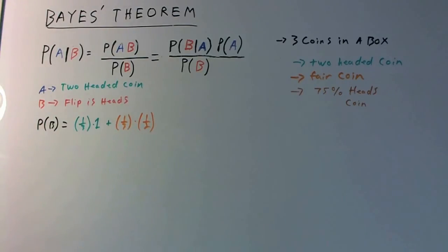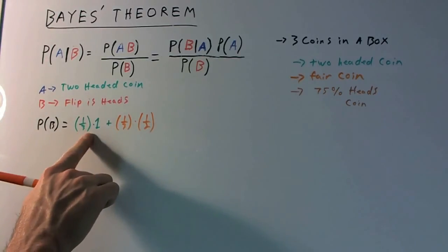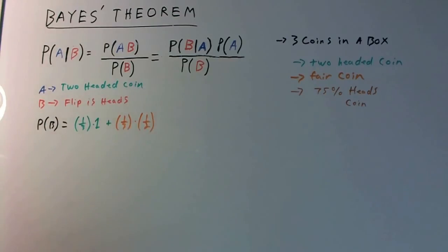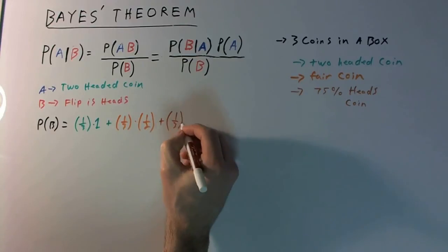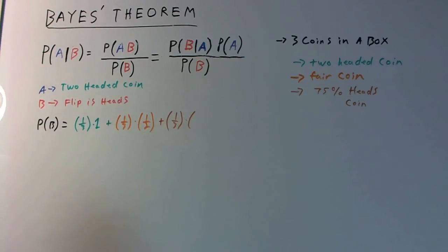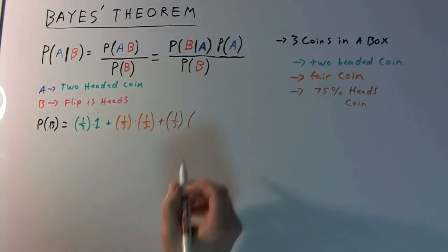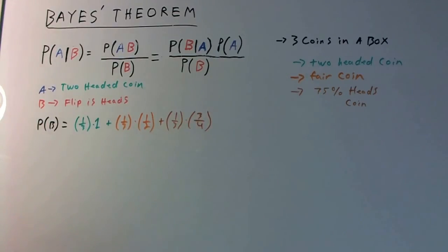Again, AND and OR rule — it could be either the two-headed coin, or the fair coin, or the biased coin. The probability of picking the biased coin is obviously one-third, and the biased coin has to come up heads, which happens three-quarters of the time, because 75% is three-quarters. So that is basically your given — that's P(B).